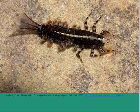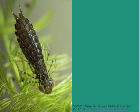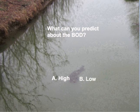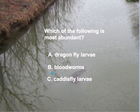Based on the abundance and diversity of indicator species: dissolved oxygen is low in this aquatic system — around one to three parts per million. What can you predict about the biochemical oxygen demand? And which of the following organisms is most abundant in this aquatic system?